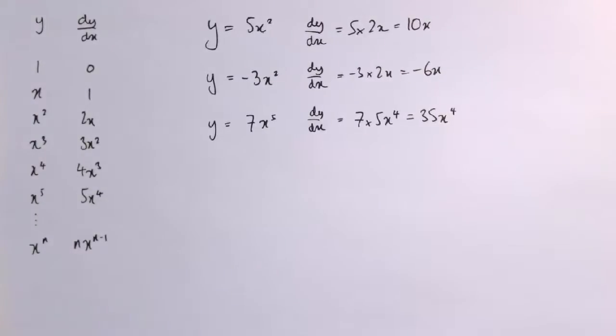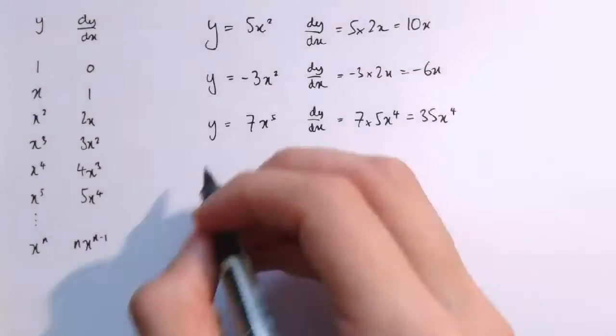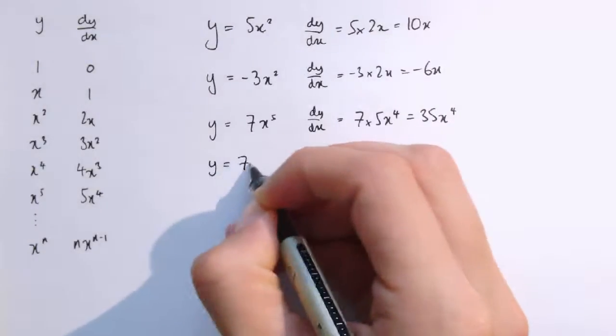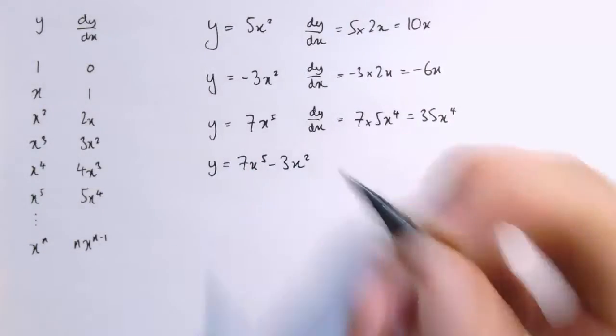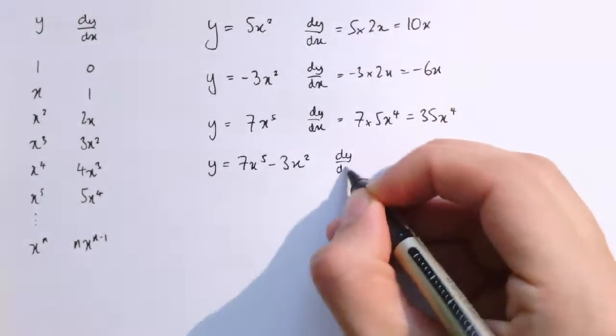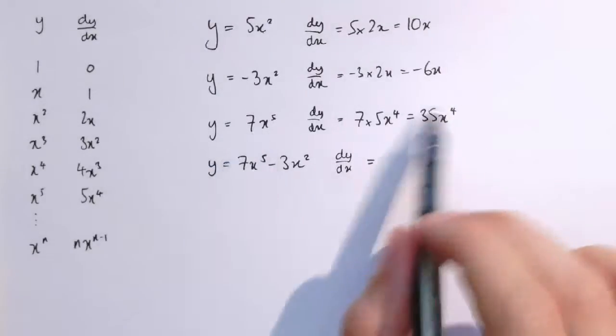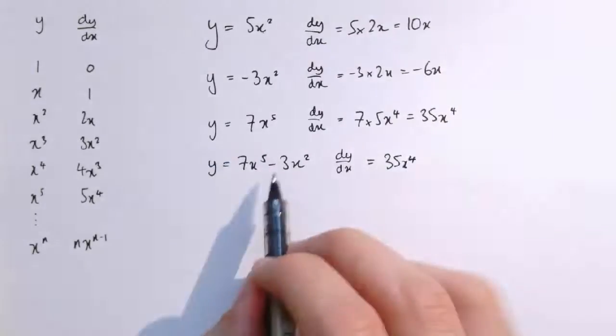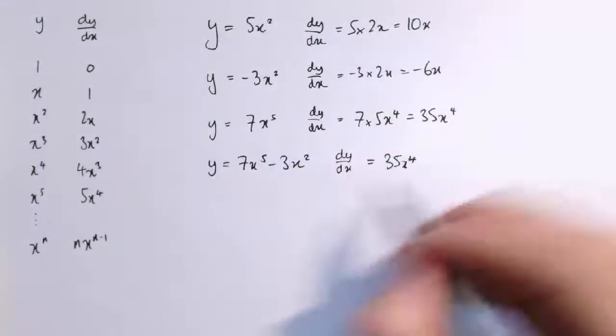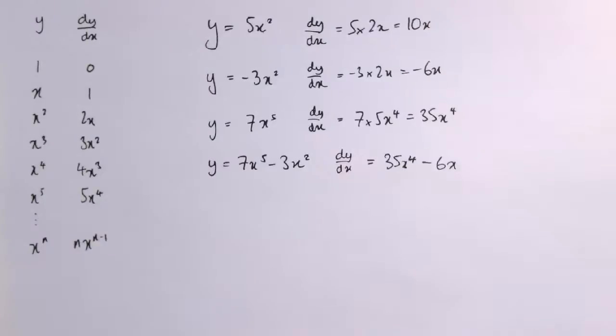And the other nice result is that, if you want to differentiate something like, let's say I had y equals 7x to the 5 minus 3x squared, well, the derivative then is, well, the derivative of 7x to the 5 was 35x to the 4, and the derivative of minus 3x squared was minus 6x, so we get minus 6x there, and that gives you the gradient function for this addition of these two functions, 7x to the 5 minus 3x squared. We can differentiate each of these parts separately, only if they're separated by addition and subtraction, I should say, and that works like that.